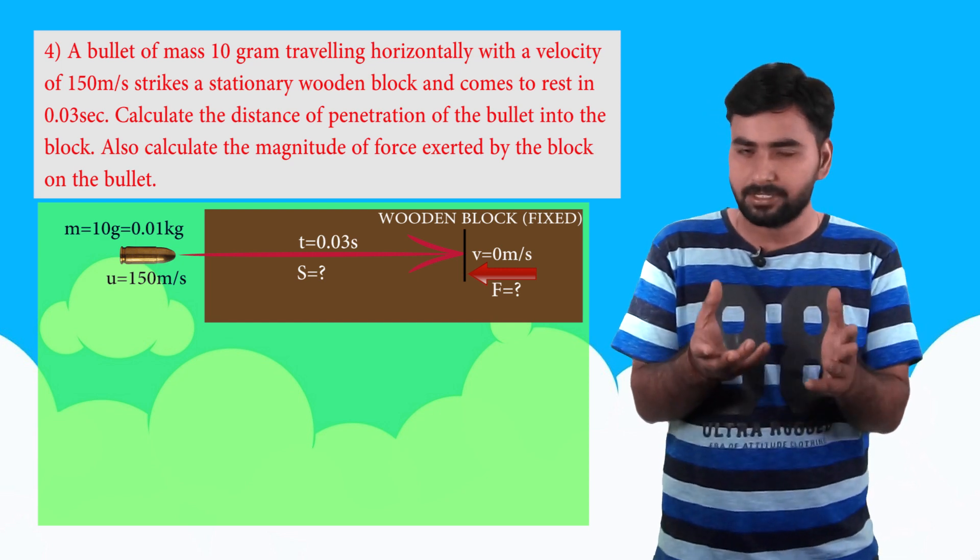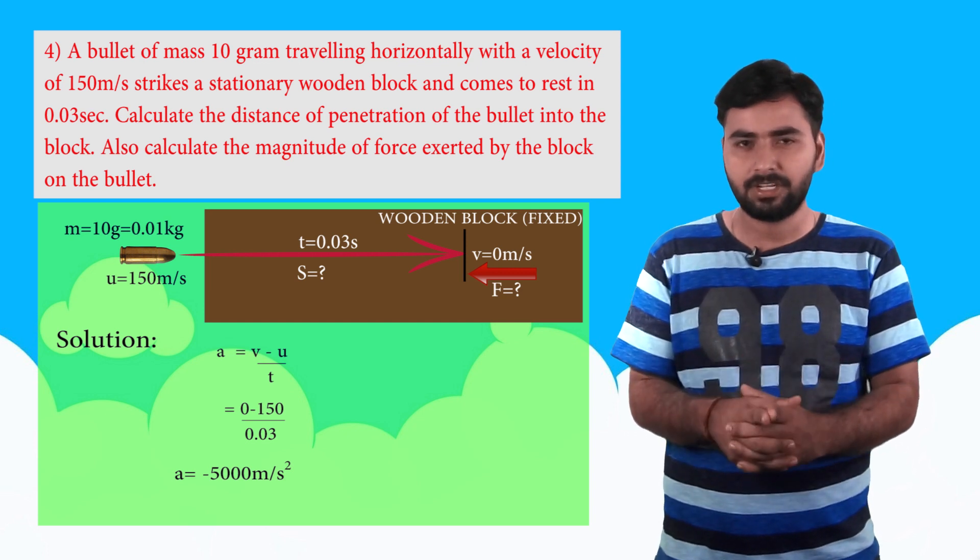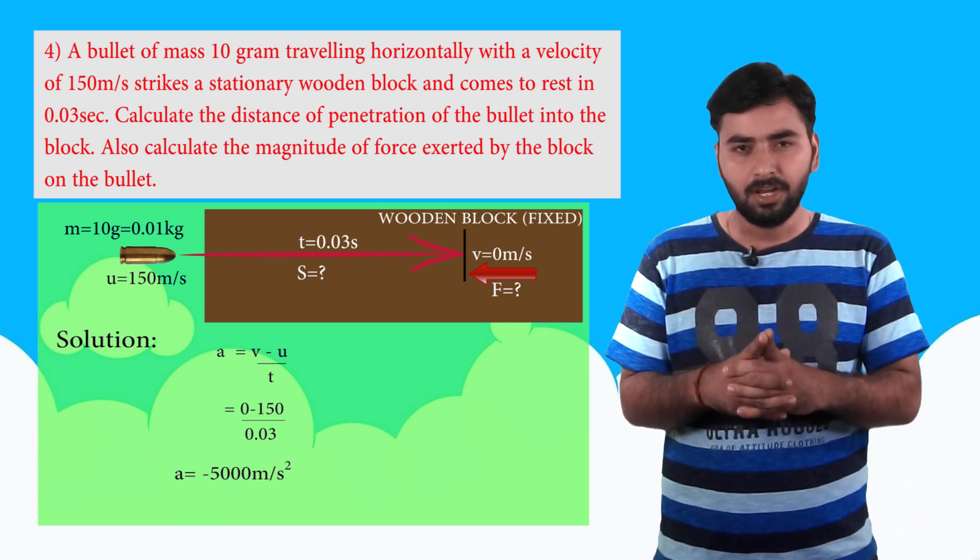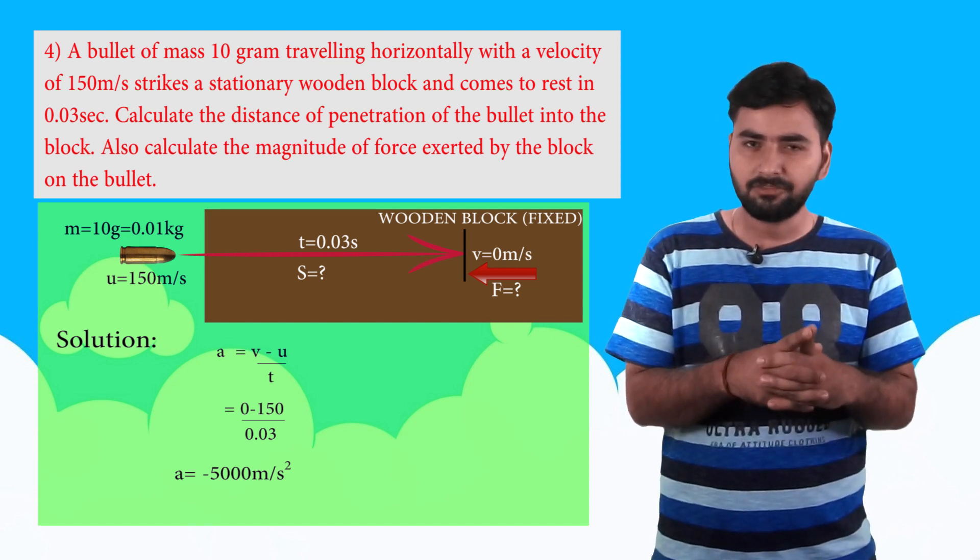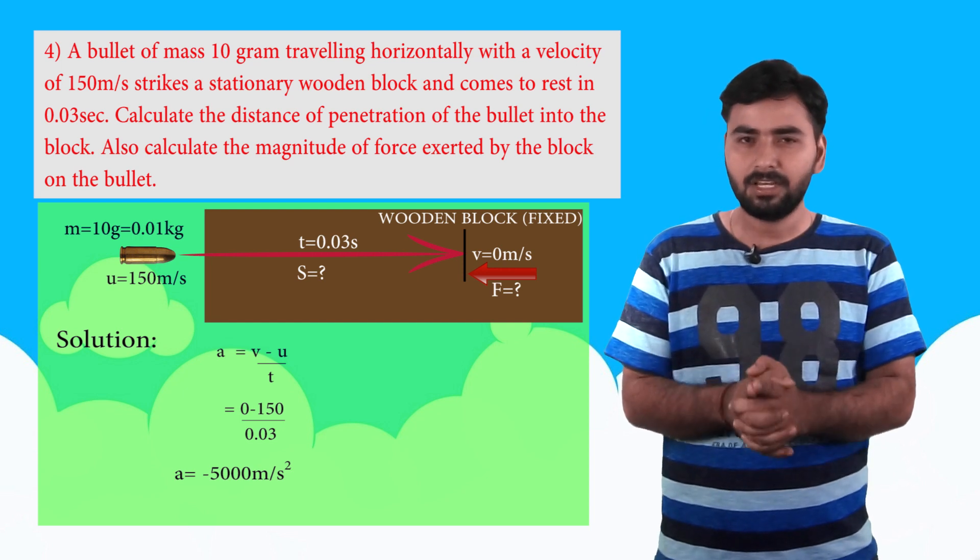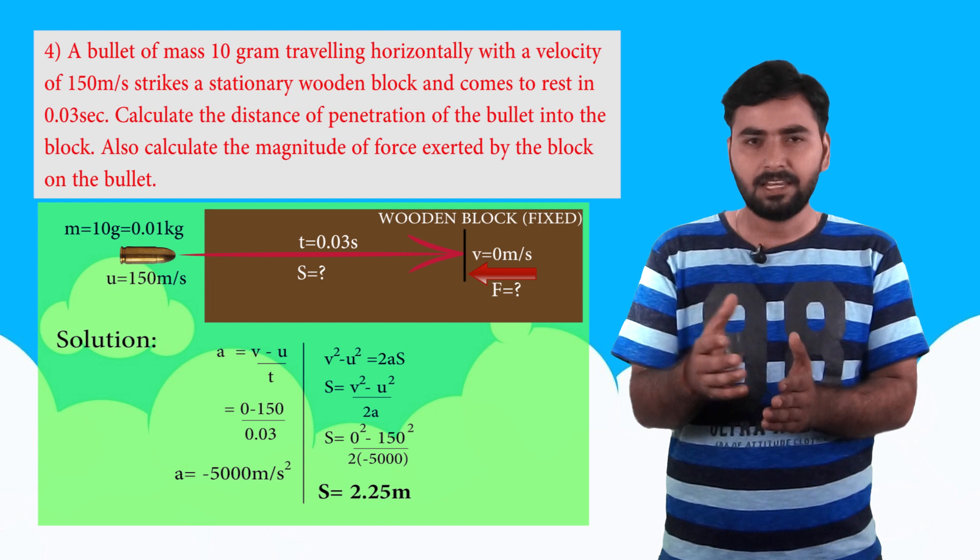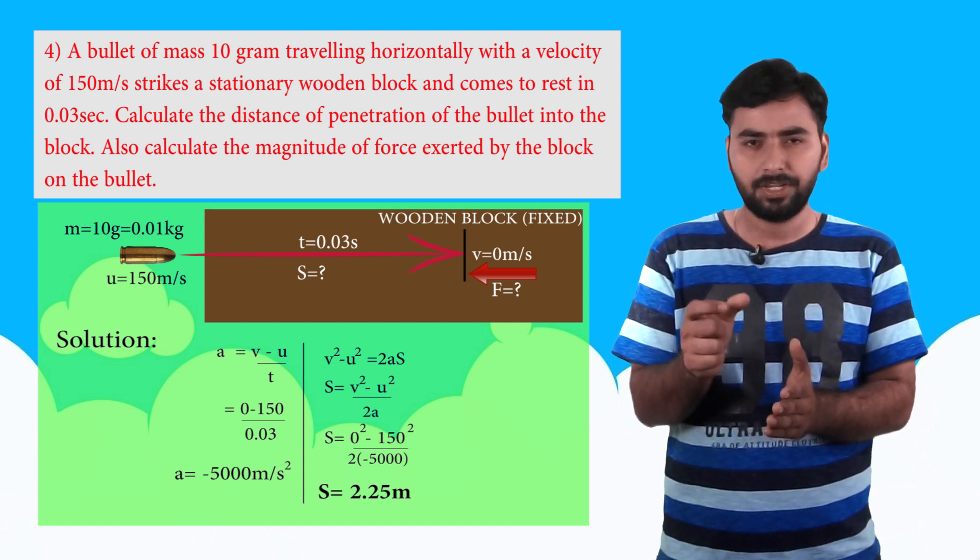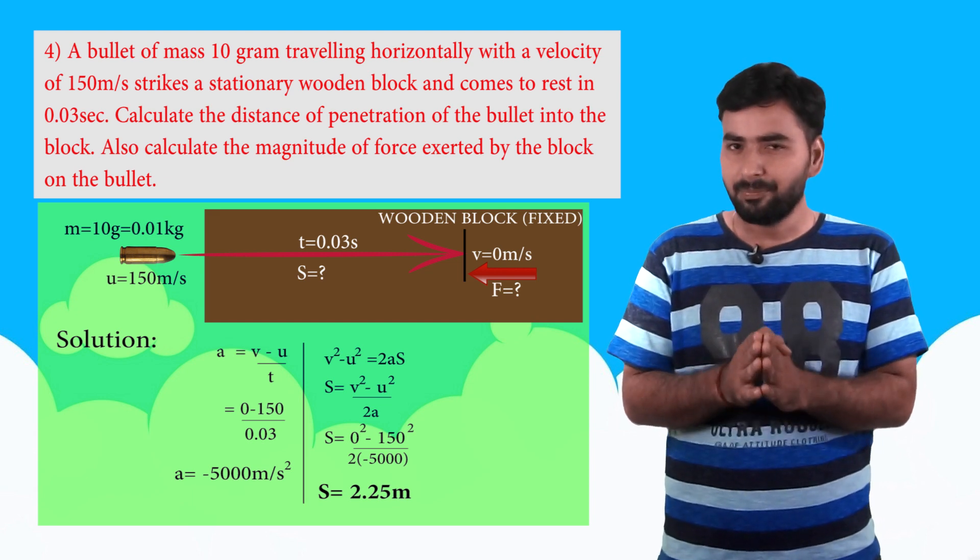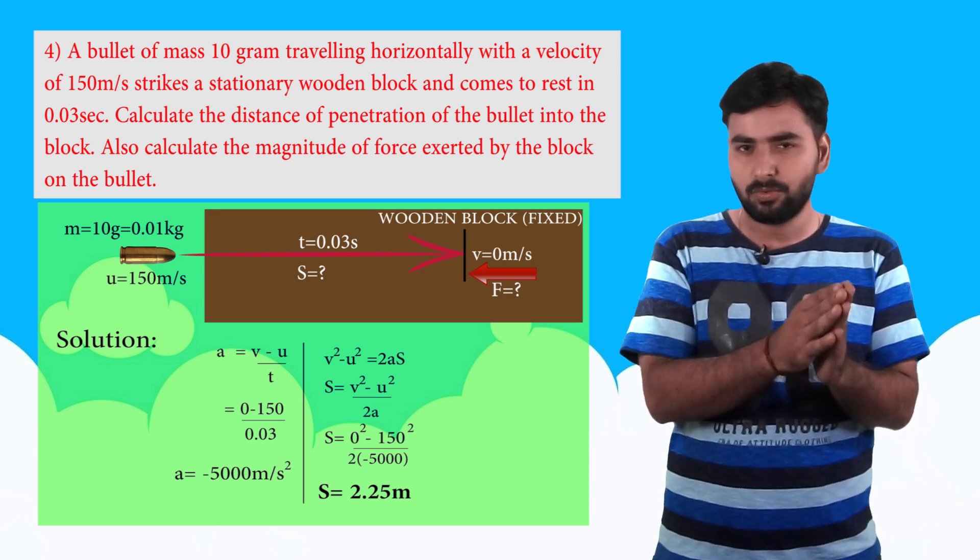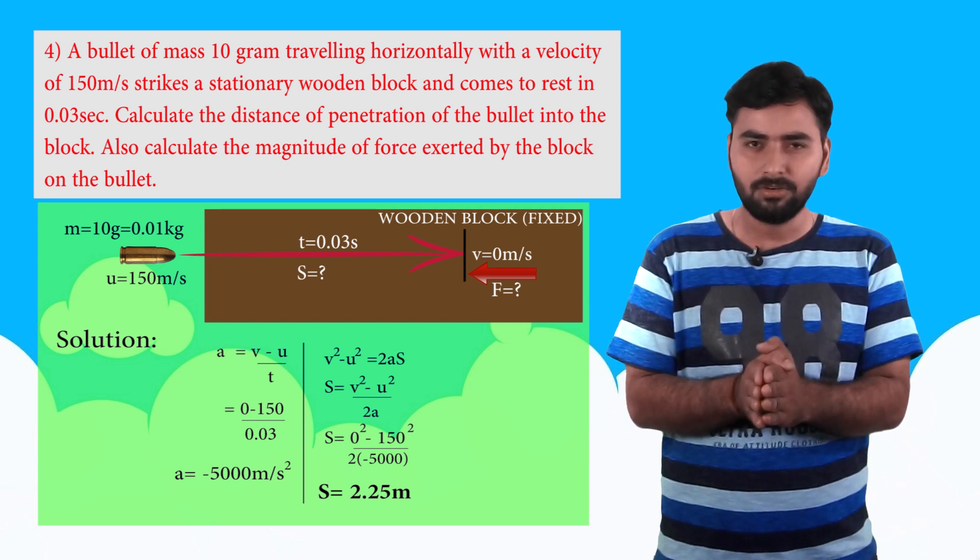The acceleration will be final velocity minus initial velocity upon time, that is zero minus 150 upon 0.03, which will be coming out to be minus 5000 meter per second square. Now we need to find displacement. That will be from kinematic equation v square minus u square is 2as. So s can be written as v square minus u square upon 2a. That is zero square minus u square is 150 square upon 2 into acceleration minus 5000.